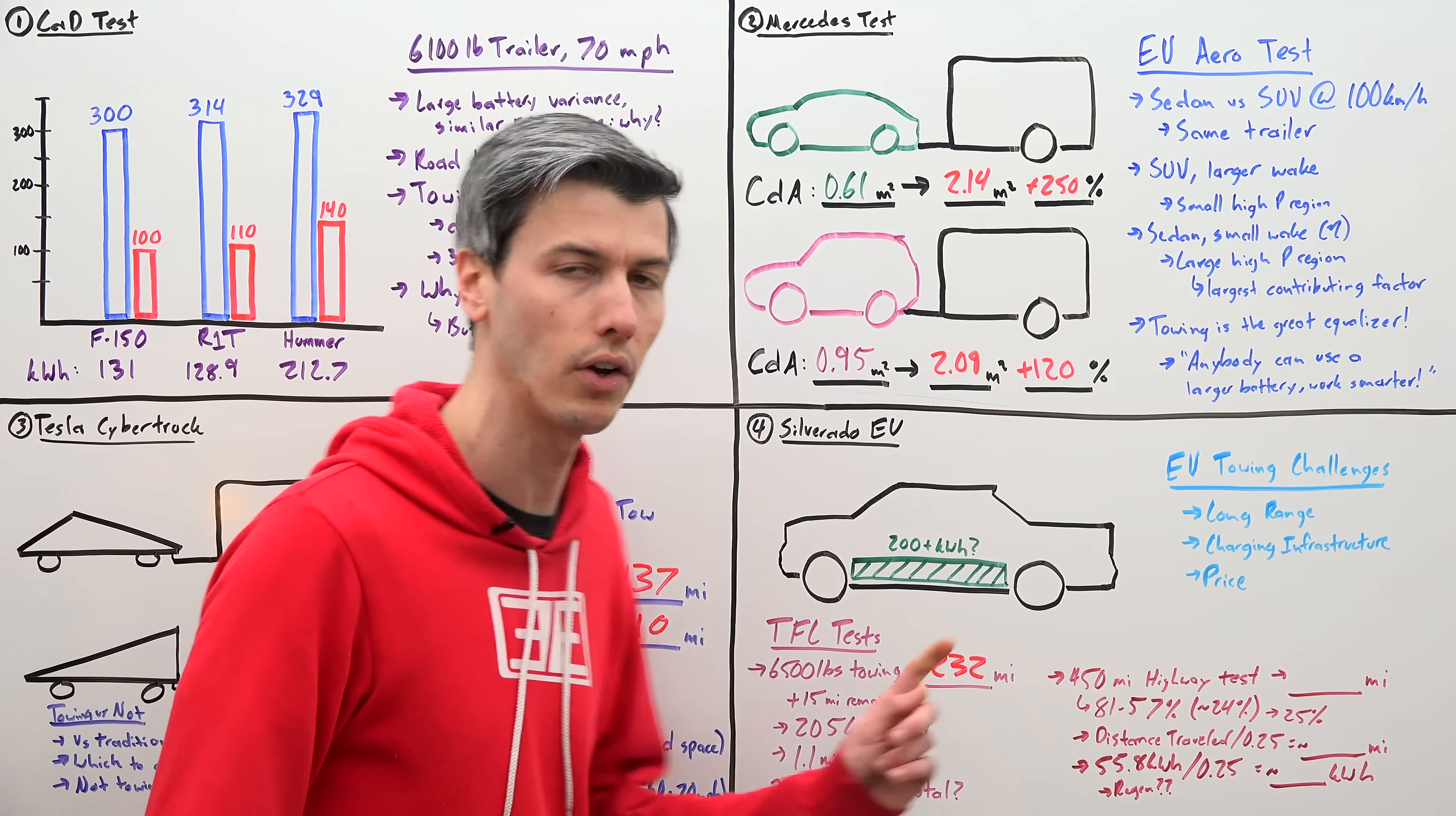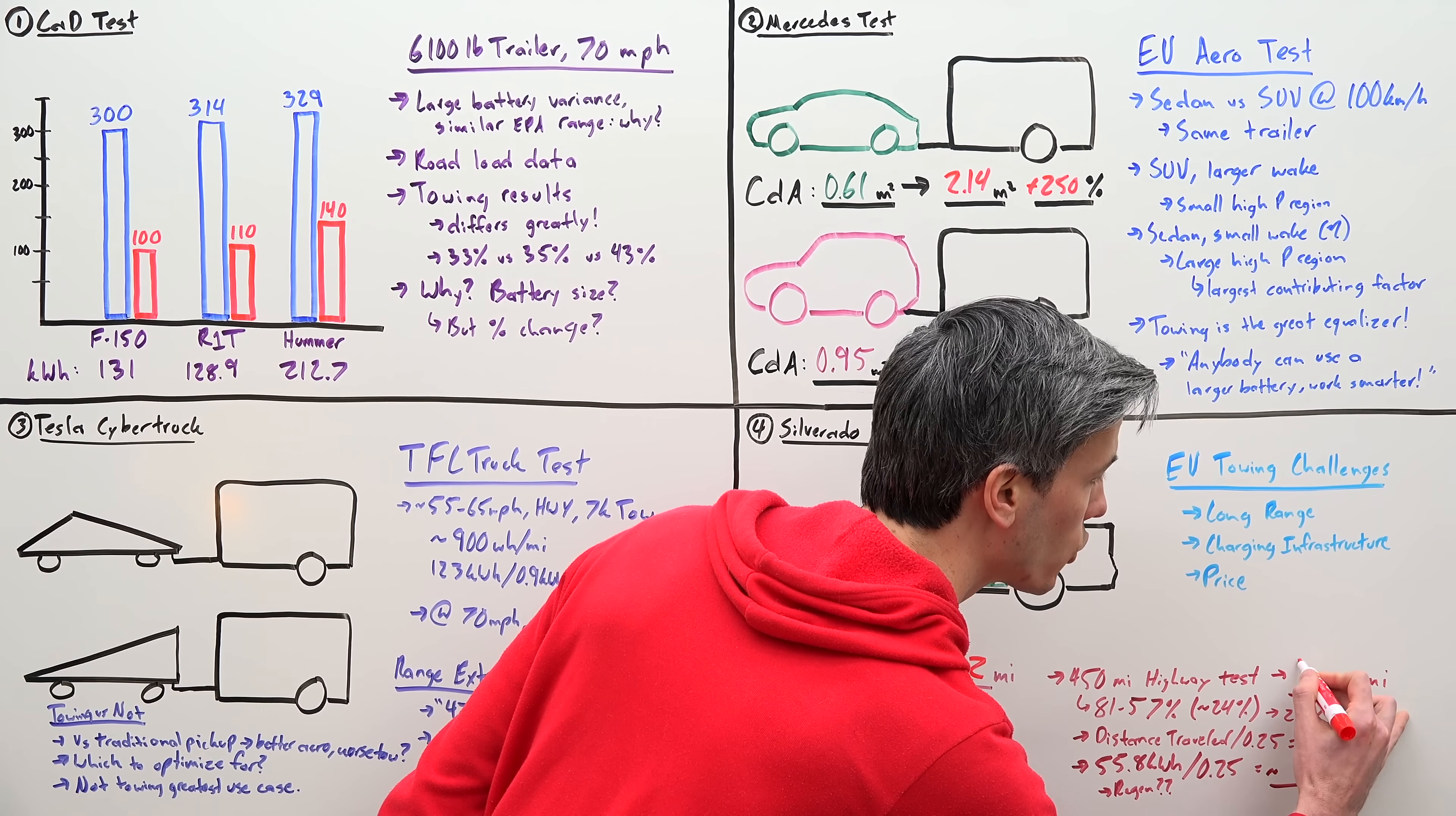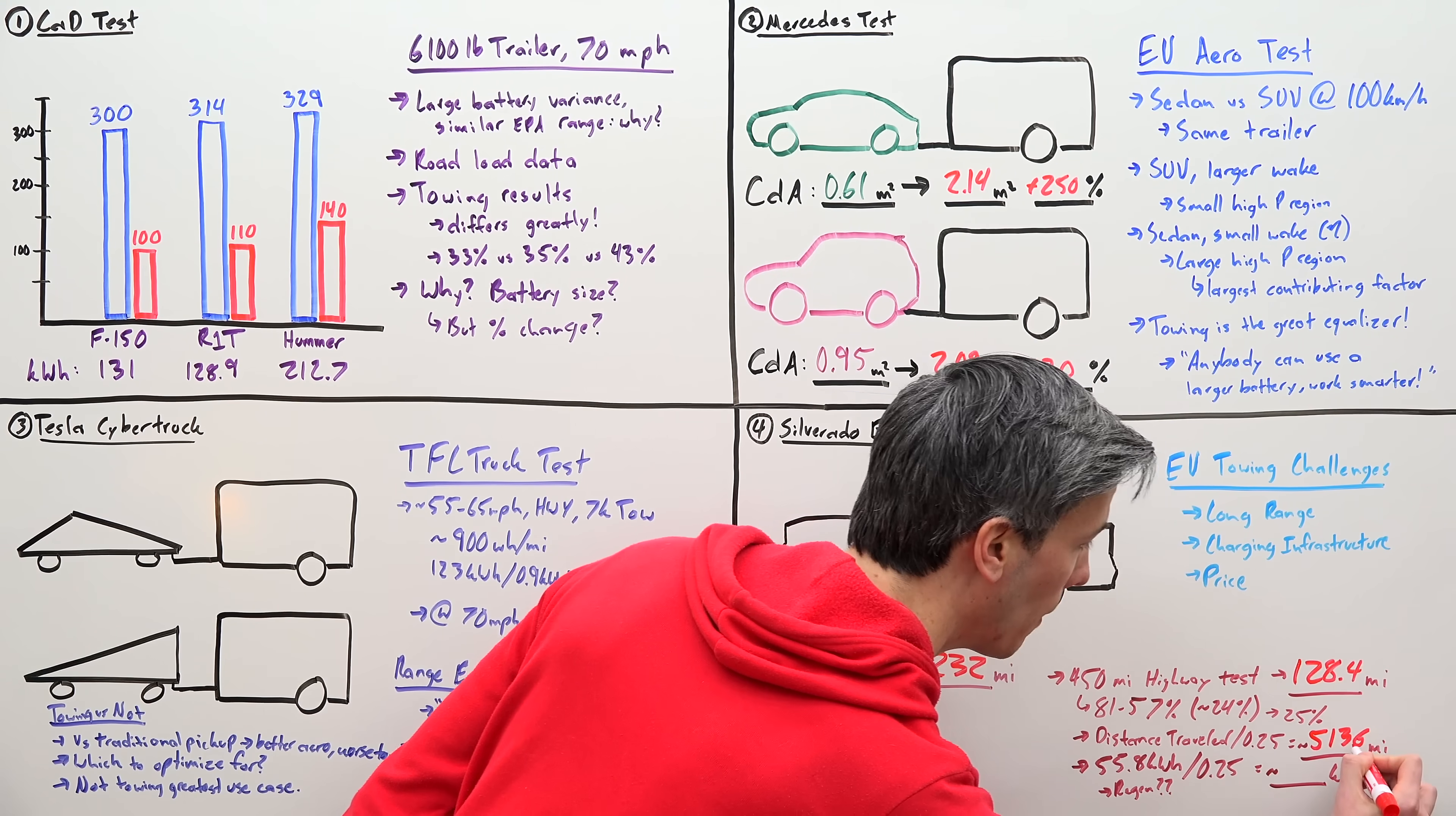Now another test they conducted was on the highway to see what's this thing's range without a trailer. They took it from 81% battery down to 57% battery, using about a quarter of the battery. And in that quarter of the battery, they traveled 128.4 miles. So if we take 128.4, we divide that by 0.25, that gives us a total range of over 500 miles. Absolutely incredible, the range on this electric truck, very impressive to see.